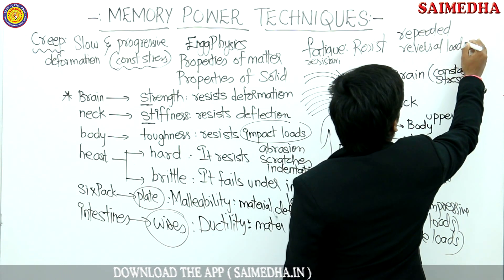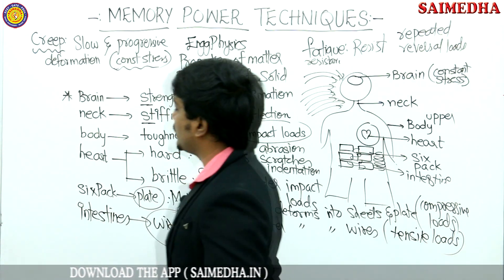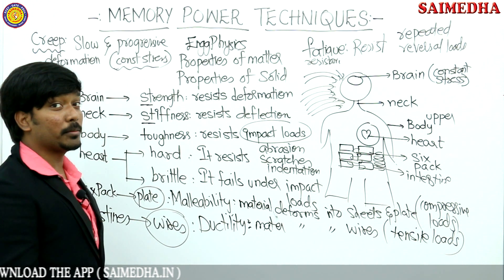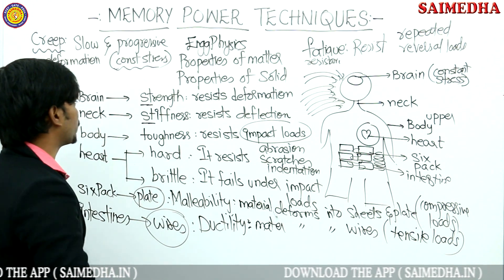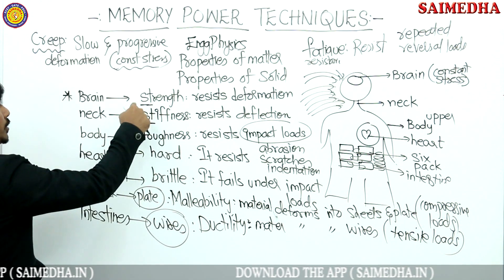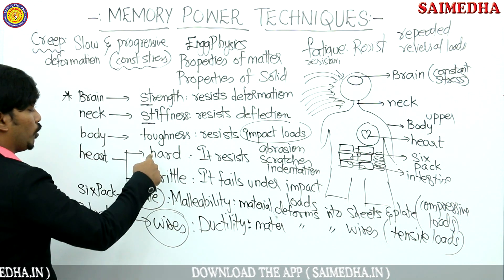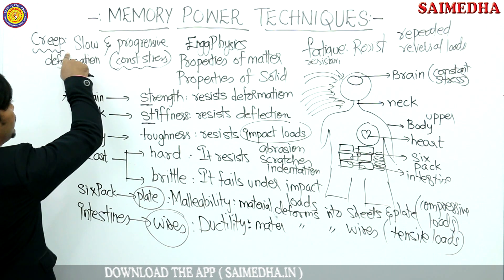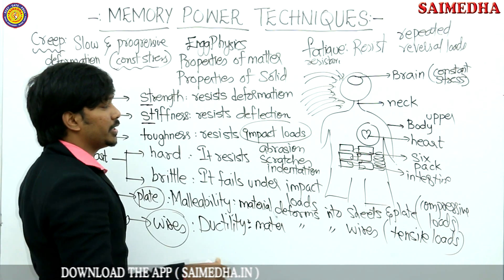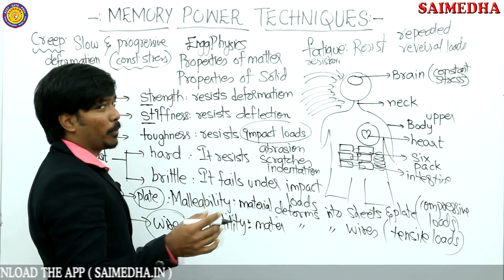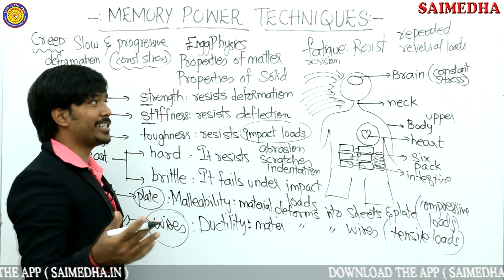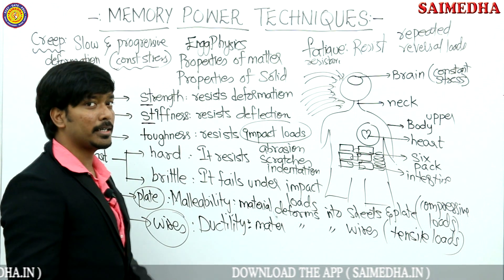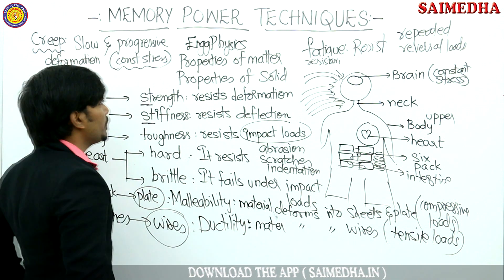So these are all the properties we have remembered within 10 minutes — 10 properties: strength, stiffness, toughness, hardness, brittleness, malleability, ductility, creep, fatigue, and one more called age hardening. We will see age hardening in the next slot.